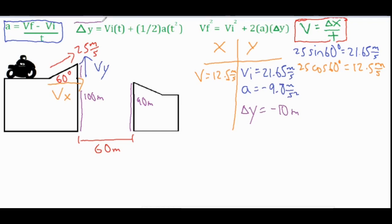Now in this case we're going to actually want to use this formula right over here and we're going to plug in delta y as negative 10. We have 21.65 times t plus one half a t squared.